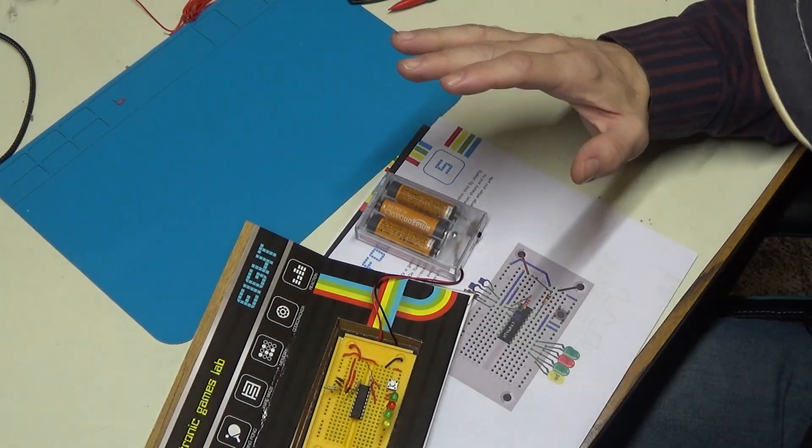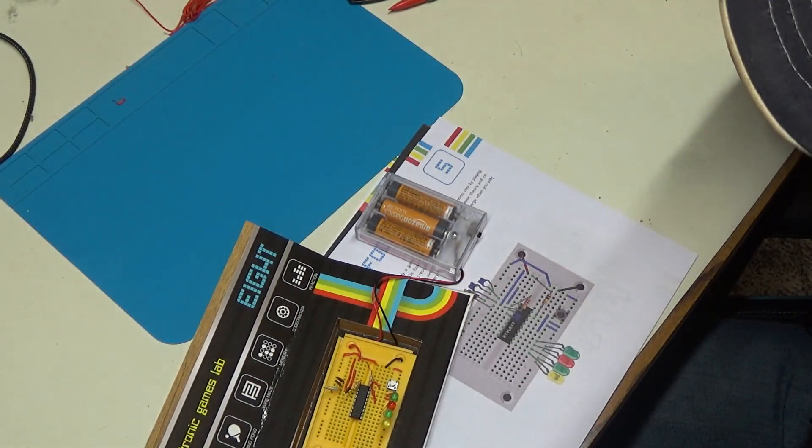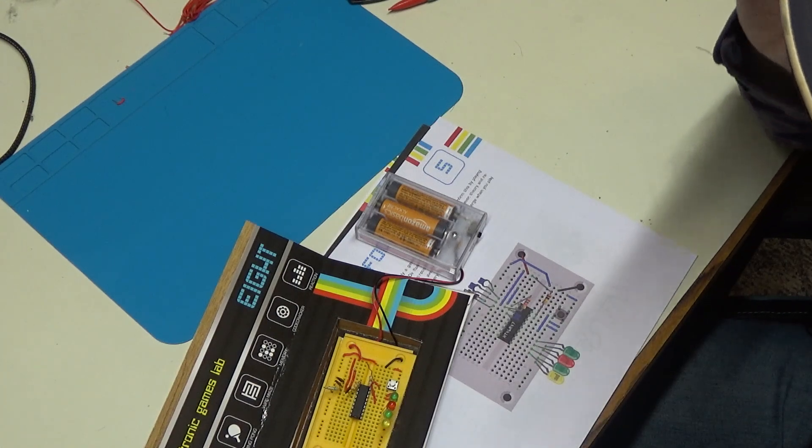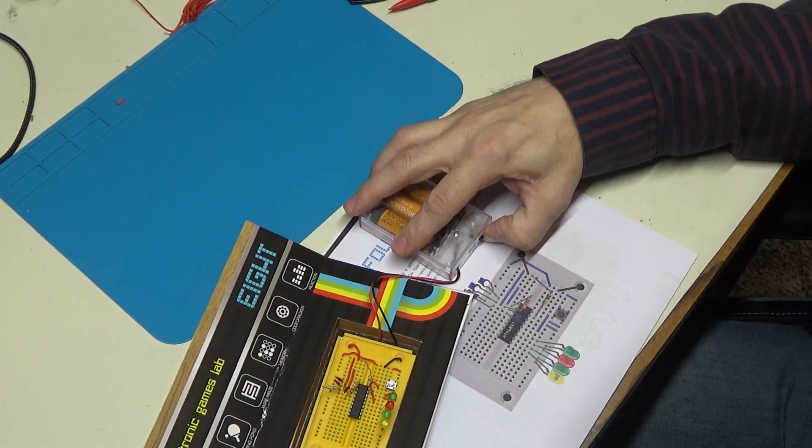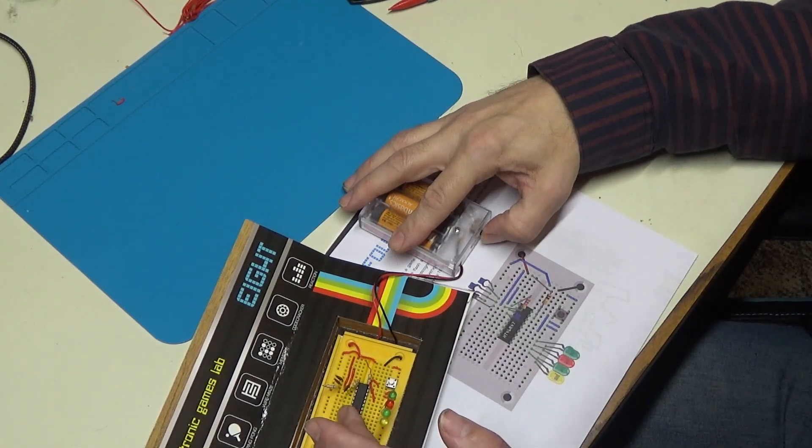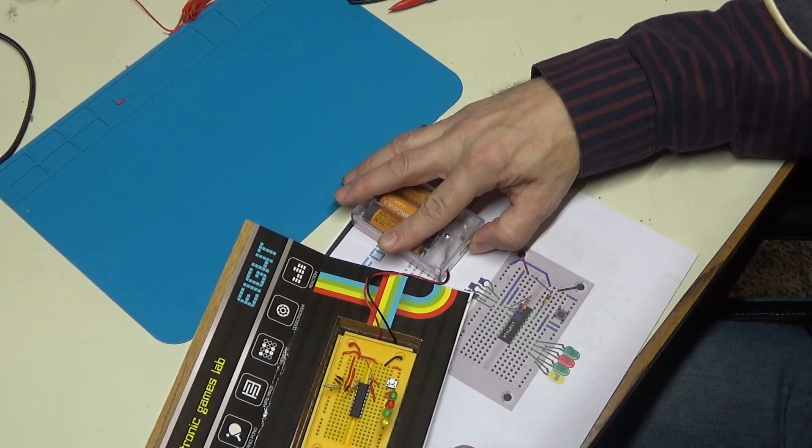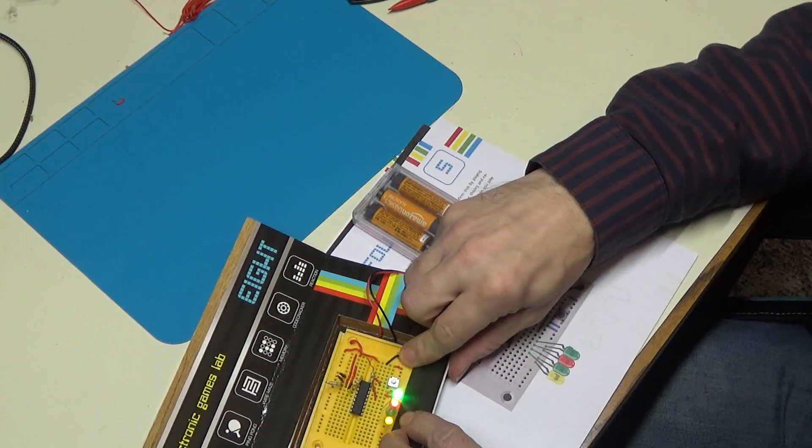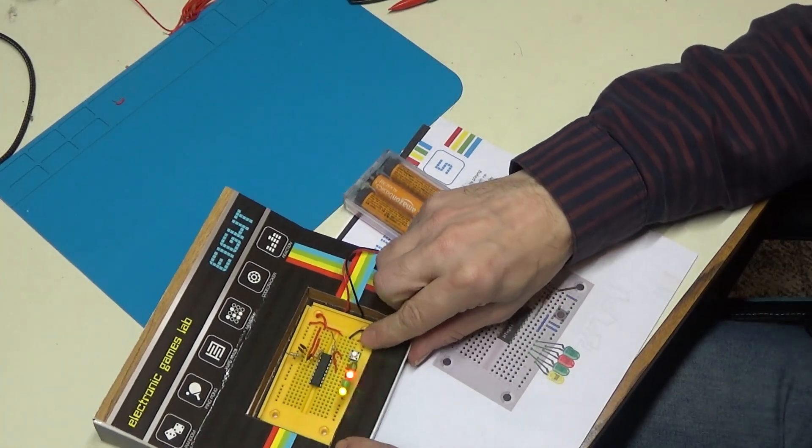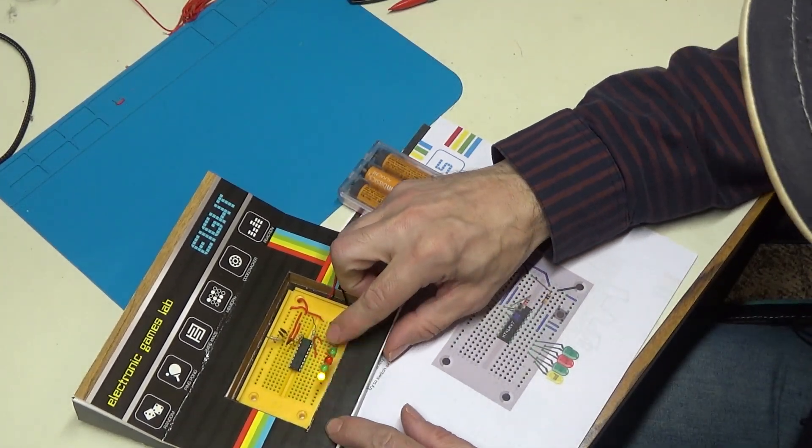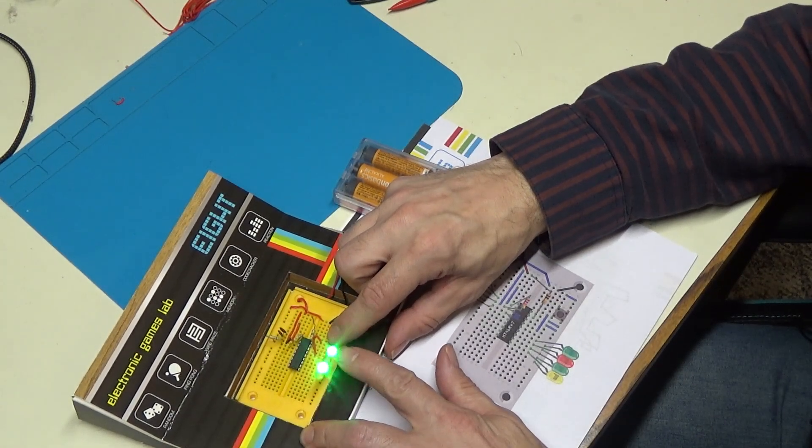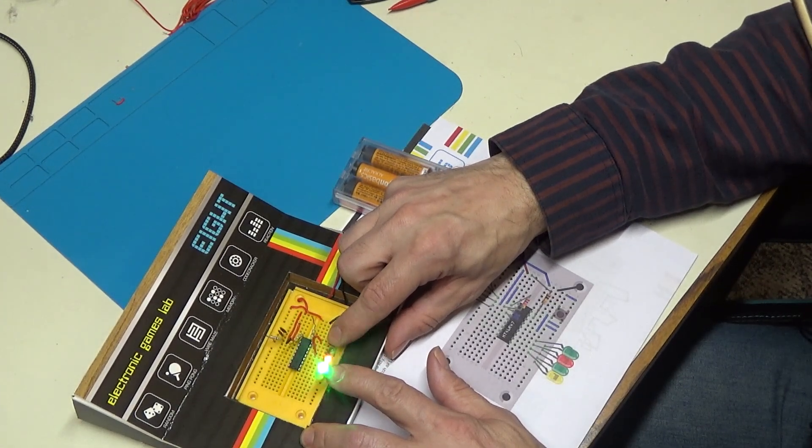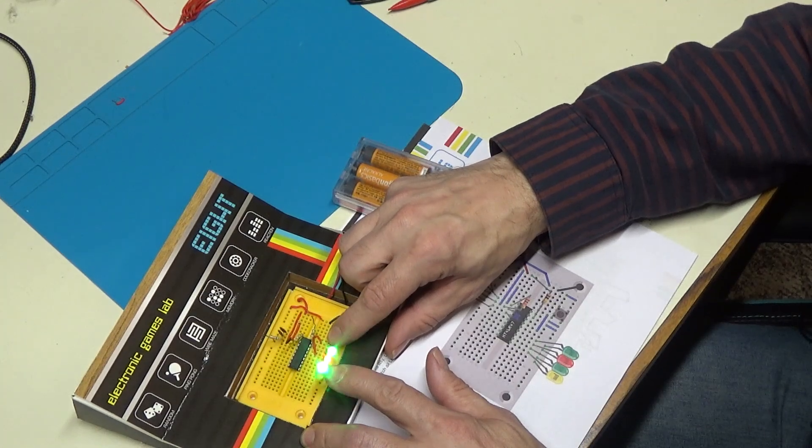In yesterday's stream, we built a four position slot machine, which essentially is a binary counter. And the whole purpose was to try to push the button and stop it at a point where all four lights are turned off.